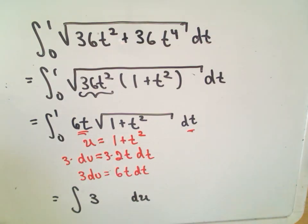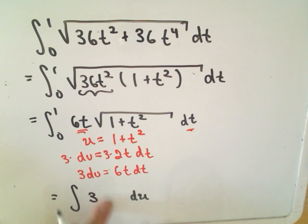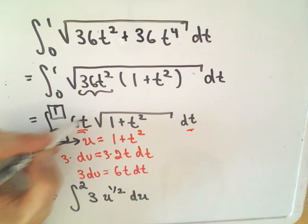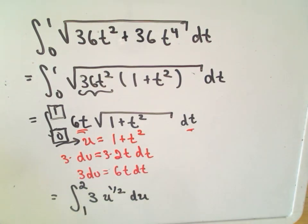So we're simply going to have the square root of u underneath. Or equivalently, we can make that u to the 1 half power. Okay, so we also have to change our limits of integration. So originally it was when t is equal to 1. So if we let t equal 1 in our integral, or excuse me in our u substitution, we'll get 1 plus 1 squared or 2. Likewise, if we let t equal 0, we'll get u equal to 1 plus 0 squared, or the lower limit of integration will turn into a 1.